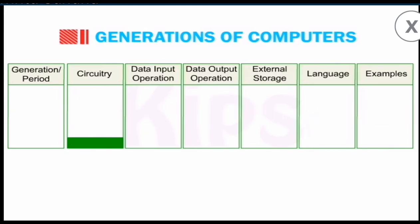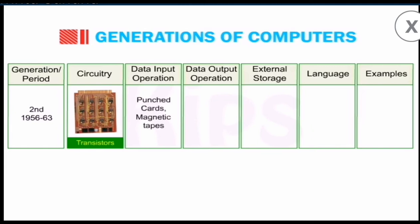Let's move to the second generation of computers, 1956 to 1963. They used transistors. Same input methods: punch cards and magnetic tapes. But output only appeared in punch card format. External storage used magnetic tapes. Languages used were FORTRAN, COBOL, and BASIC. Examples are IBM 1400 and 700 series, and IBM 350.